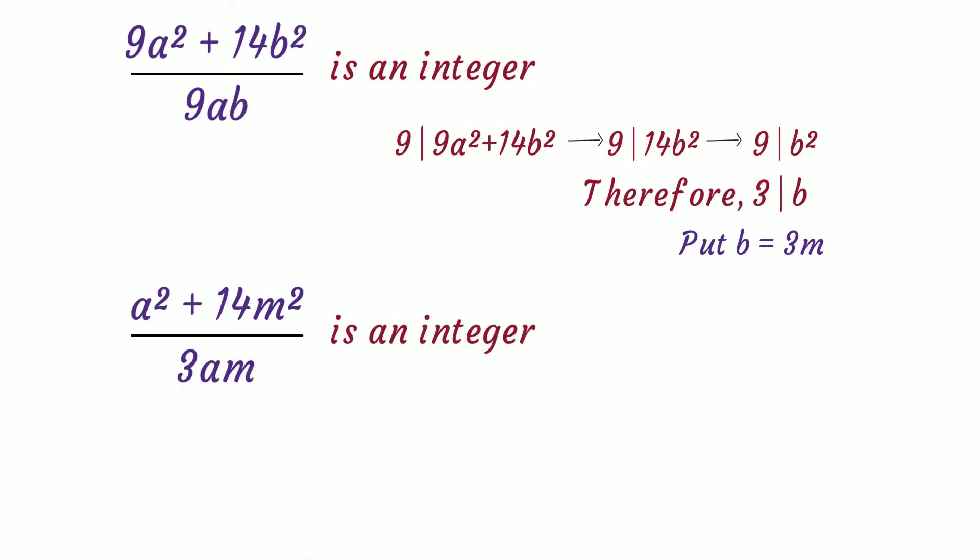Now, since m divides the denominator, m must also divide the numerator. As m already divides 14m², m must divide a².